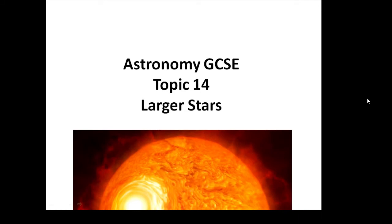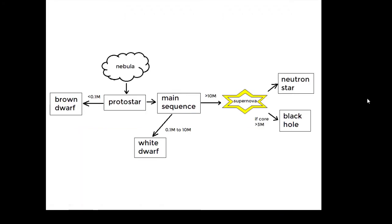Astronomy GCSE topic 14: larger stars. We've talked about the Sun. Now we also need to know about the life cycle of much bigger stars. I've summarized this on a diagram. I recommend you learn this diagram. We start with a nebula, then inside the nebula we get a protostar. What happens next all depends on the mass.